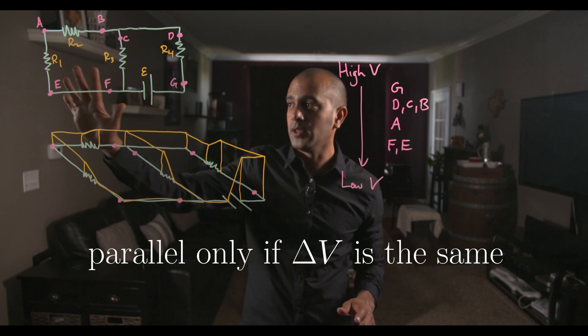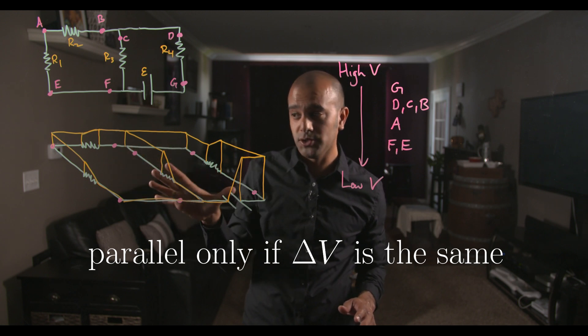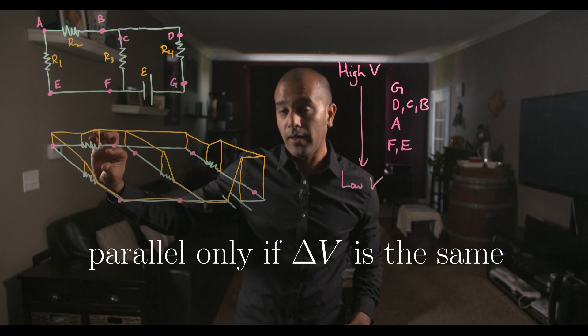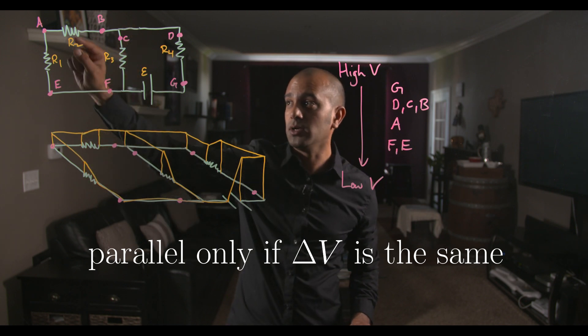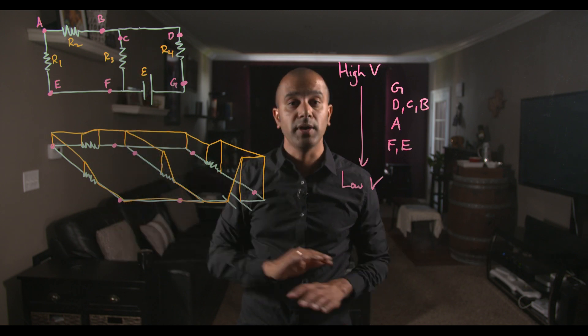For example, R1 and R3, they look like they're in parallel here, but if you look at our voltage map, which makes it very clear looking at our voltage map, R3 certainly has a bigger voltage drop across it than R1. And the reason is because voltage has to drop across R2, which is between these two resistors. So R1 and R3 are not in parallel.